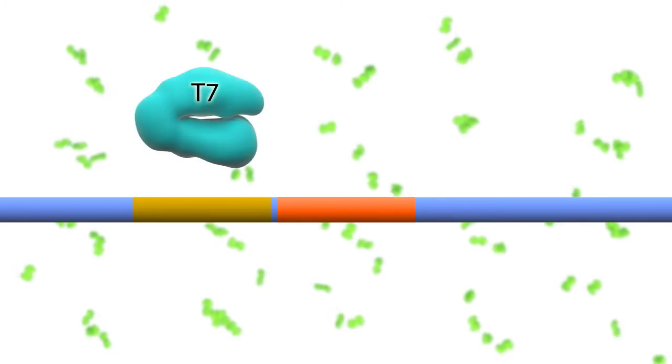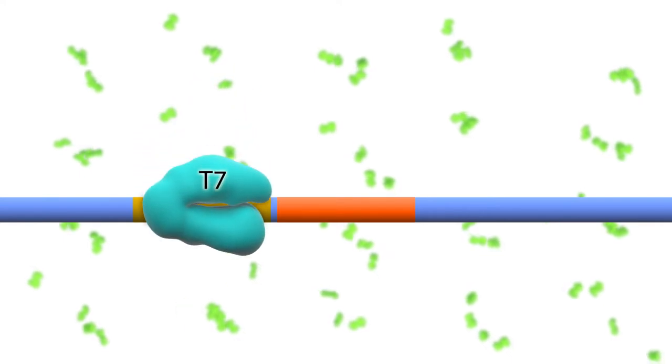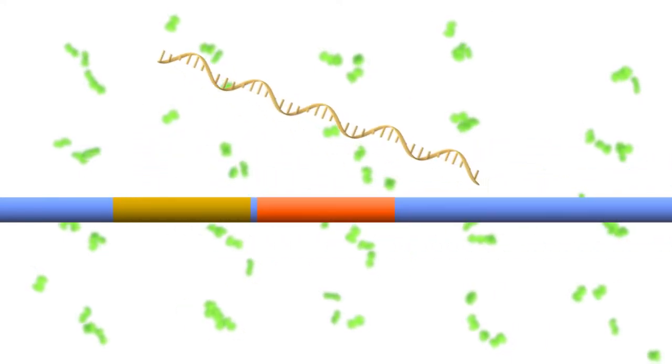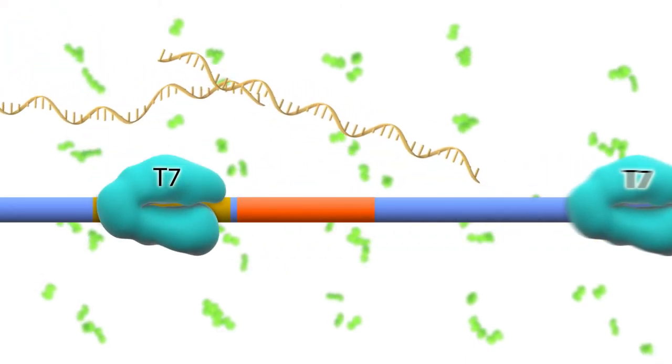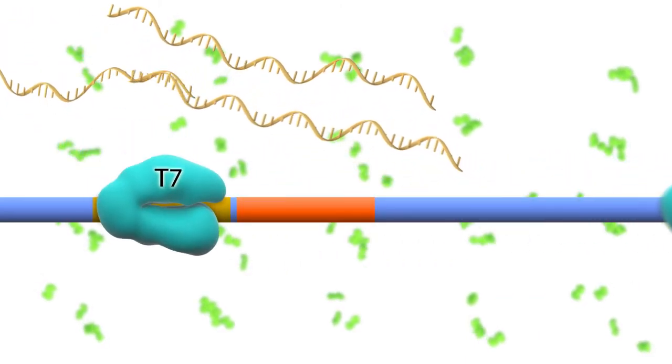This results in de-repression of the lac promoter, thereby allowing production of the T7 RNA polymerase. The T7 RNA polymerase then binds to the T7 promoter in the plasmid and allows for production of RNA encoding the target protein.